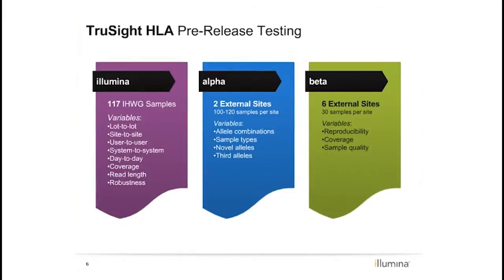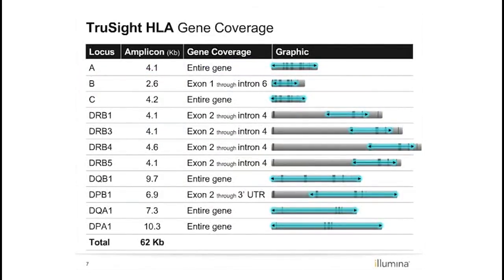We were really eager to test the limitations of the assay. We looked at reproducibility, with each site doing 30 samples across at least three runs, as well as coverage and different sample qualities. The assay covers 11 amplicons or loci ranging in size from 2.6 KB on the smallest end to 10.3 KB on the large end — 62 KB of total sequence when running all loci per sample. The graphical coverage view shows that in most cases we're covering the entire gene, and in others all critical exons and intervening introns.